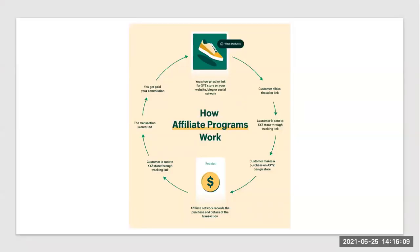Probably the best example of an affiliate website is the meerkat - comparethemarket. They don't sell insurance but they act as an affiliate, making their money from the insurers and providers. I'll explain how affiliate marketing programs work: you show an ad or link on your website, blog or social network; the customer clicks the link; the customer goes to the store; the customer makes a purchase; the transaction is recorded; and you get the commission.